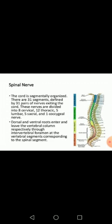The cord is segmentally organized into 31 segments which have 31 pairs of spinal nerves. There are 8 cervical and 12 thoracic segments, along with lumbar and sacral segments, which are all origins of the spinal nerves.